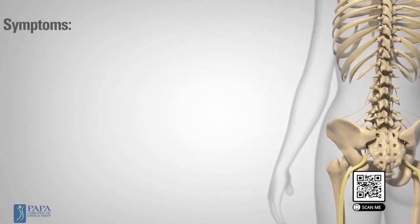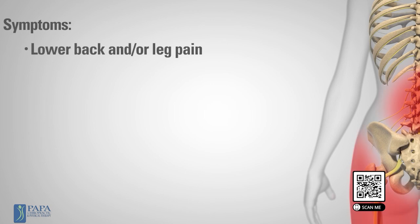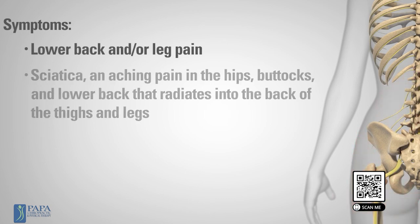Symptoms of spondylolisthesis may include lower back and/or leg pain, sciatica, an aching pain in the hips, buttocks and lower back that radiates into the back of the thighs and legs.